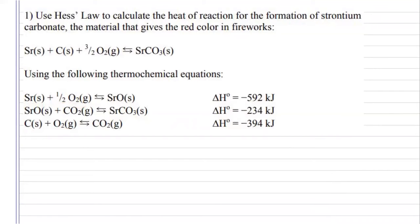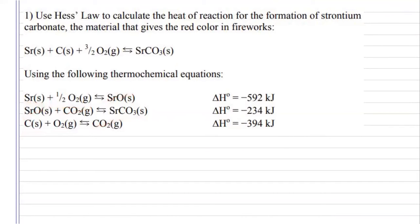Let's see what can cancel. Strontium oxides will cancel, carbon dioxide will cancel, and one mole of strontium, one mole of carbon — one plus a half, so that's three over two — and one mole of the strontium carbonate. So it looks like it's all set up already for us, so we can just add up all of our enthalpies and get an enthalpy of the reaction of negative 1,220 kilojoules.